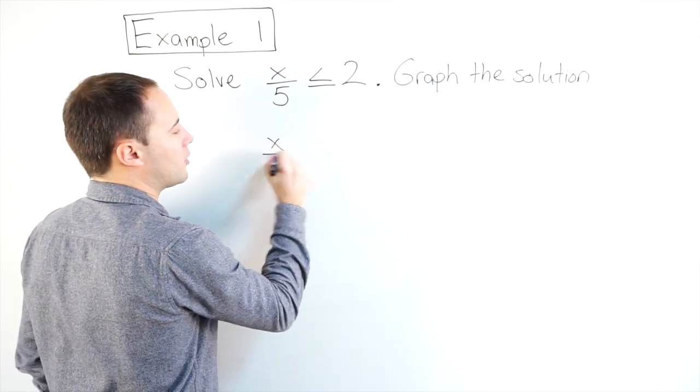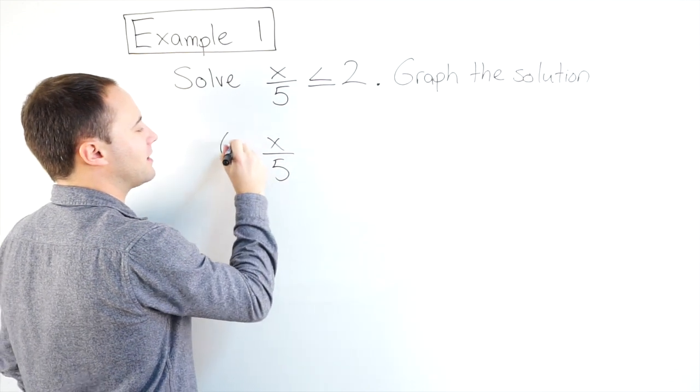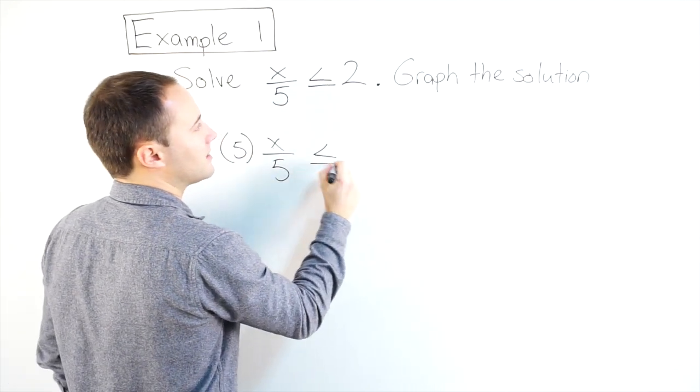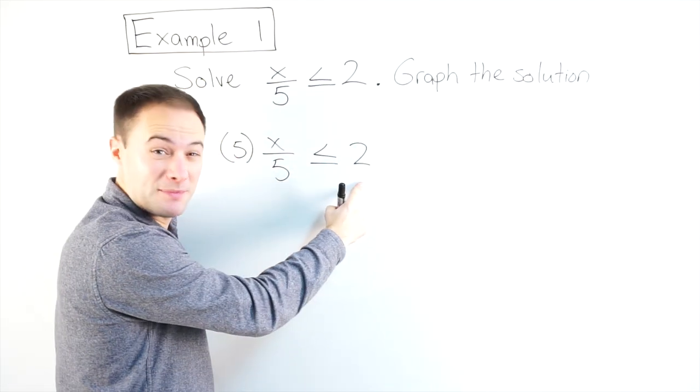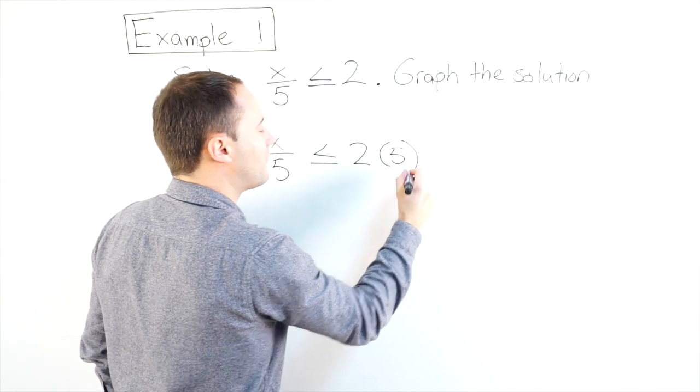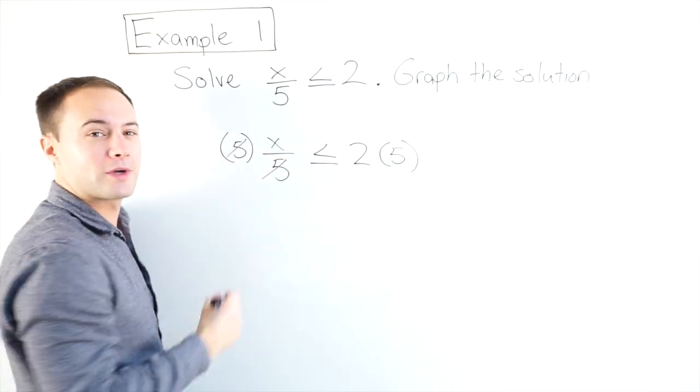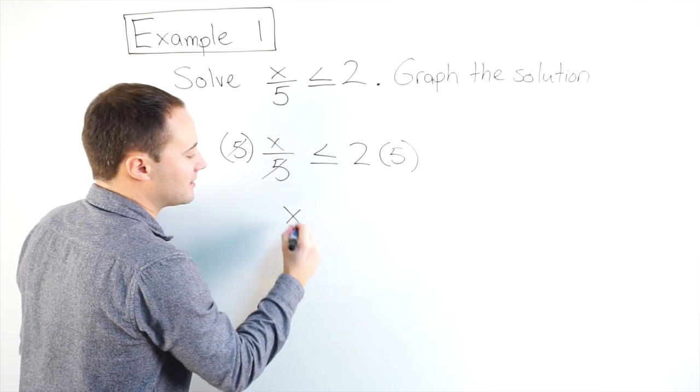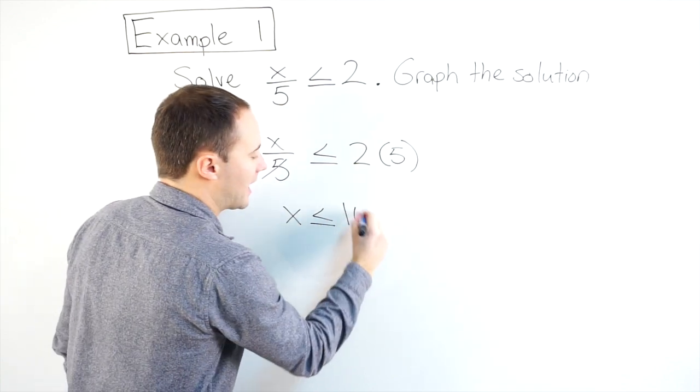So here we go. x over 5, if I multiply this side by 5, less than or equal to 2, do the same thing on this side, multiply that side by 5, those 5s will cancel out, and I'm left with x is less than or equal to 10.